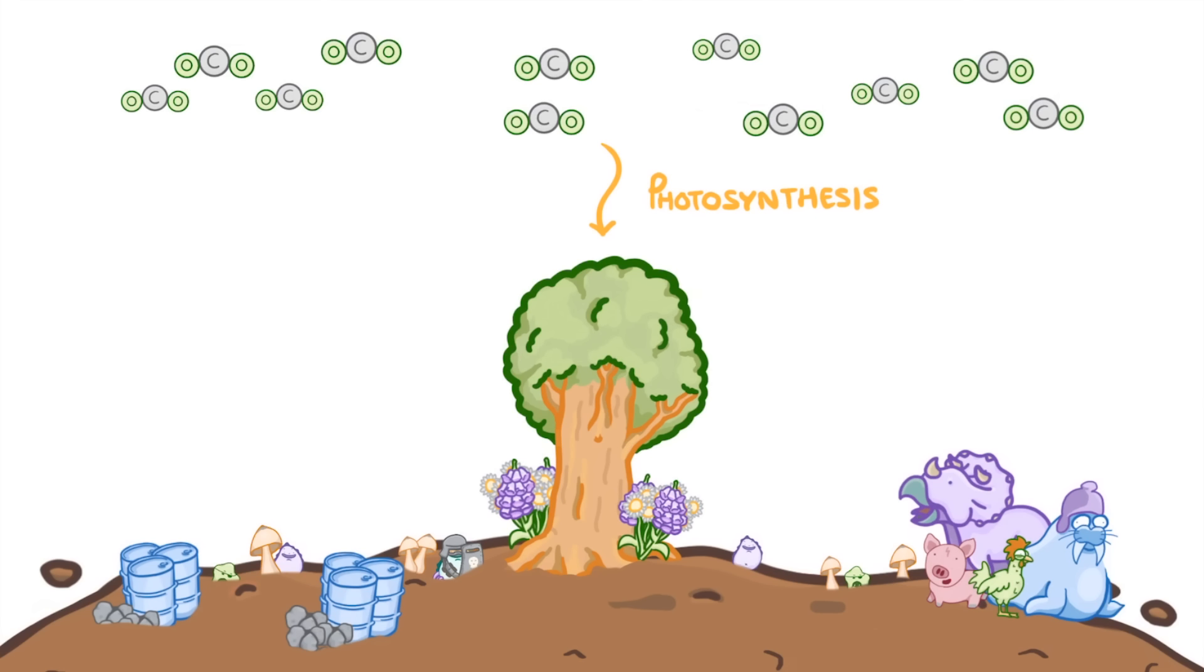This carbon that's now locked up inside them can then do two things. It can be passed back out to the atmosphere by respiration or passed on to animals that eat the plants. And of course the animals themselves could then also respire to release carbon dioxide.